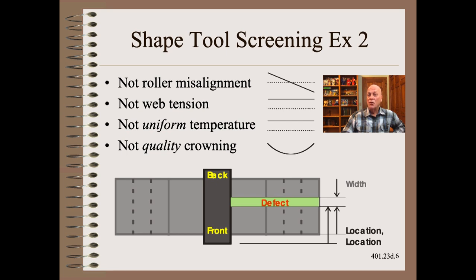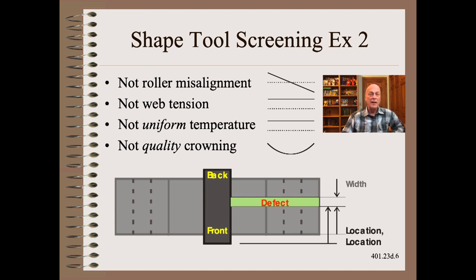Let us return to our streaky coder as an example of lane troubleshooting using the shape tool. Here we can eliminate misalignment, web tension, and uniform temperature and quality crowning as root cause mechanics — we do this by shape alone. Physics alone is all that is needed to know the shape of roller misalignment. Measurement is merely confirming magnitude, not shape.